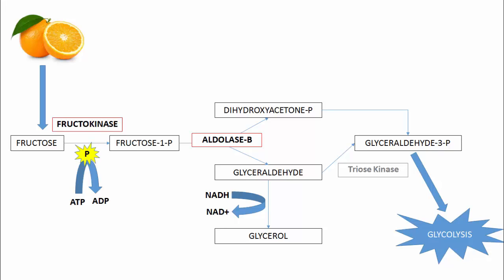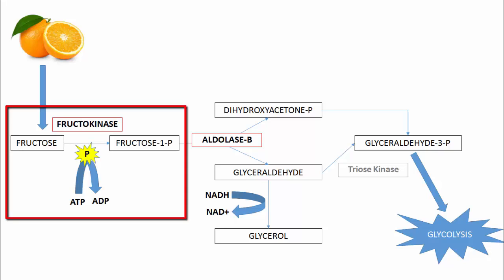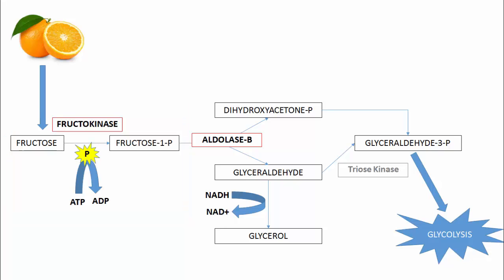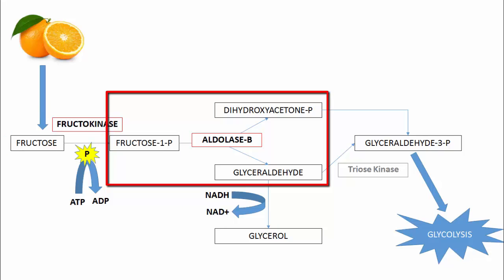This process begins with dietary fructose, which is typically ingested as fruit or fruit juices in kids. The first step in our pathway is to convert dietary fructose to fructose-1-phosphate with the enzyme fructokinase. The next step involves converting fructose-1-phosphate to one of two products: dihydroxyacetone phosphate or glyceraldehyde, through the enzyme aldolase B.